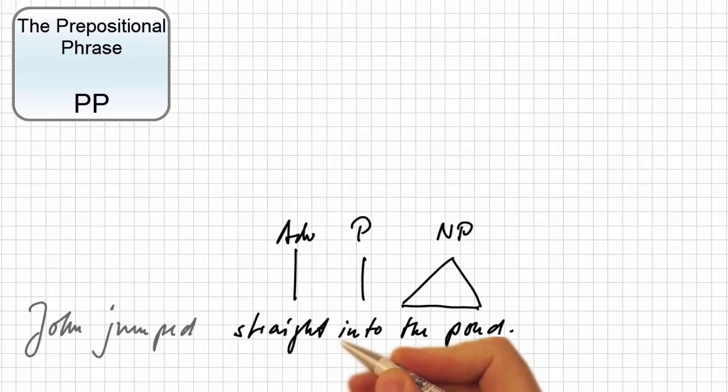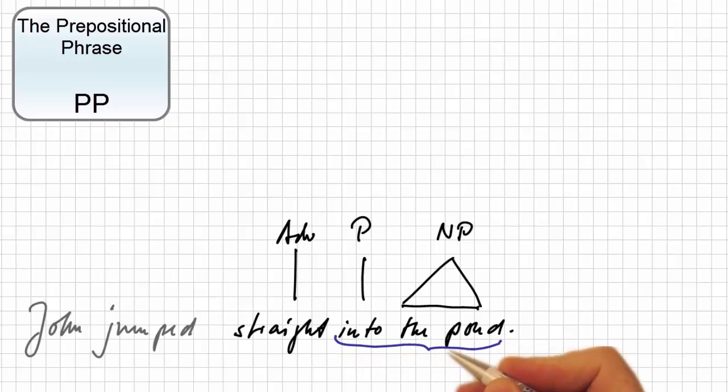Now clearly the preposition and the noun phrase form a constituent, because we can replace into the pond by a proform, for example, by there, as in John jumped straight there, or by where, when we build an echo question such as John jumped straight where?